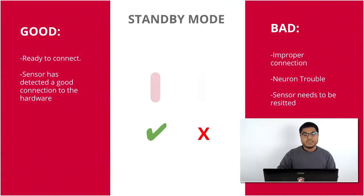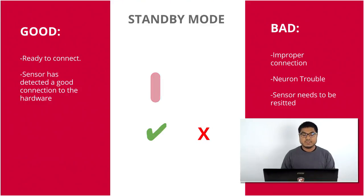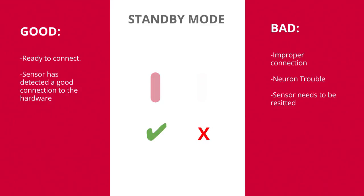Let's go into standby mode. There's a good and there's a bad. Standby mode is when you have the sensor connected to your computer but not connected to Axis Neuron — it's just powered by your computer. Good mode is when you're having breathing mode. When breathing mode is activated, that means there's a good connection and the Perception sensor is ready to connect to Axis Neuron.